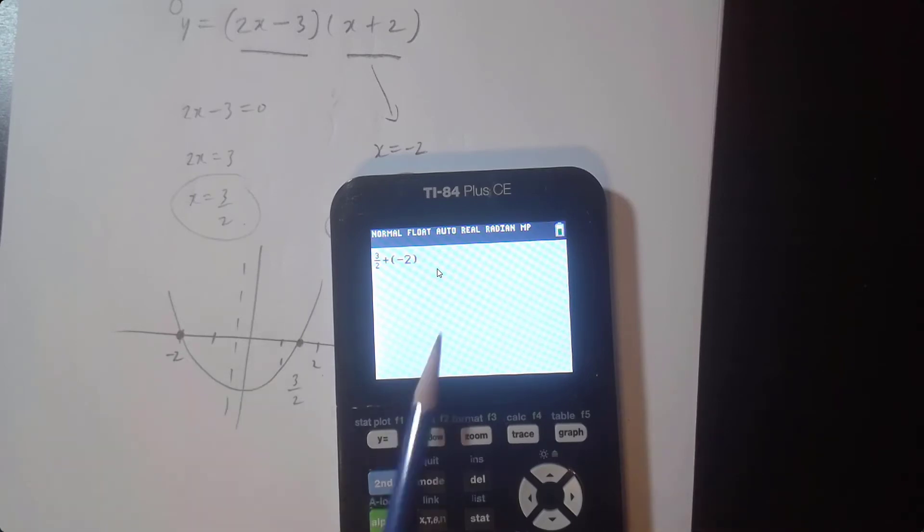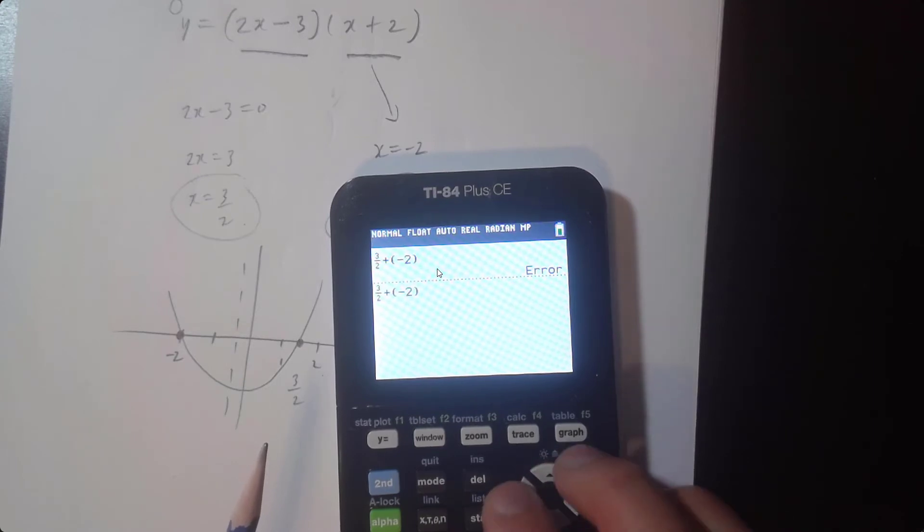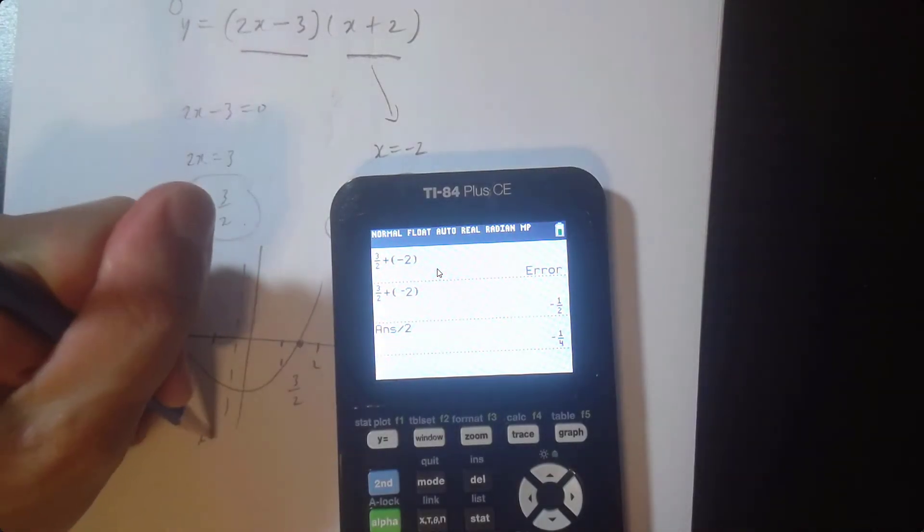So when we add the intercepts on the calculator, we get error. Make sure on the calculator you use the negative button, not the minus button. So we get negative 1 half, but remember to divide by 2. That answer is negative 1 fourth. So x equals negative 1 fourth.